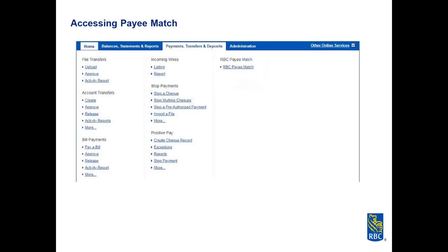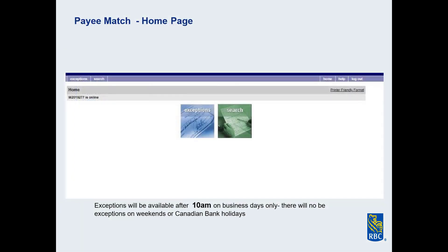To access Payee Match, begin by signing into RBC Express using your email address and password. From the home page, select Payments, Transfers, and Deposits on the blue banner at the top of your screen. If your administrators have given you access to Payee Match, you will see the link on this tab. By clicking on the link, you will be entering the Payee Match portal.